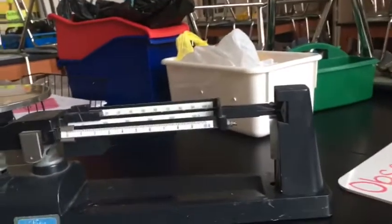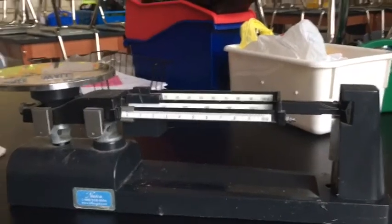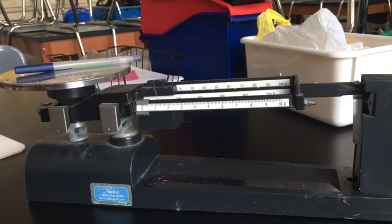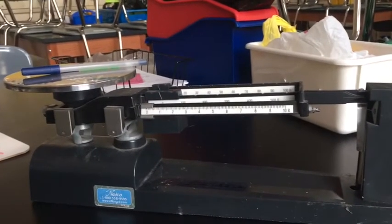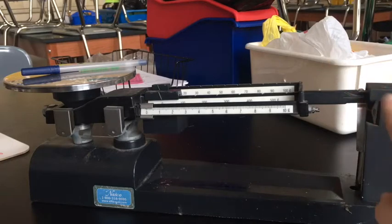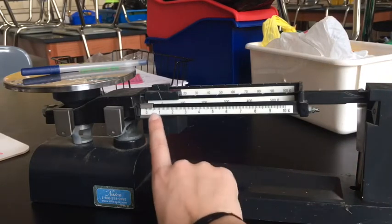Let's add something to this triple beam balance. I'm gonna add a pen, so I just have a blue pen here. And do you see how this white line over here is not balanced anymore? So we have to balance it out. I'm gonna start with the ones here.